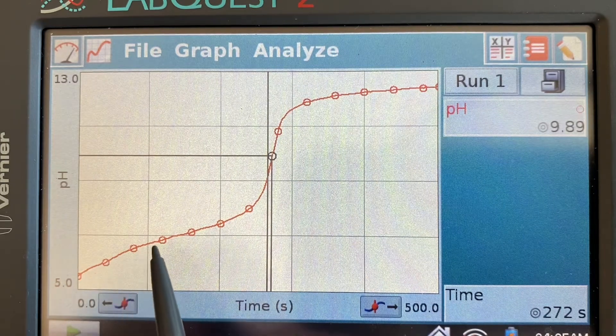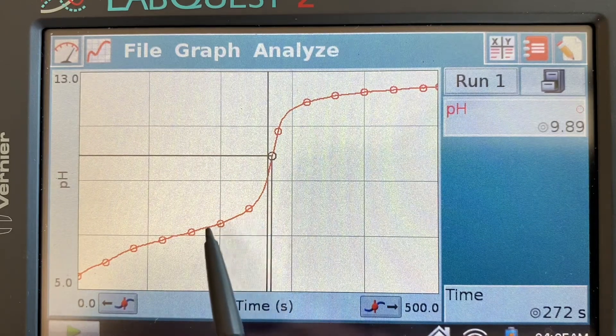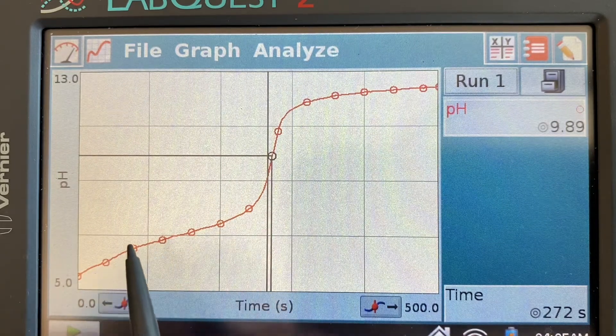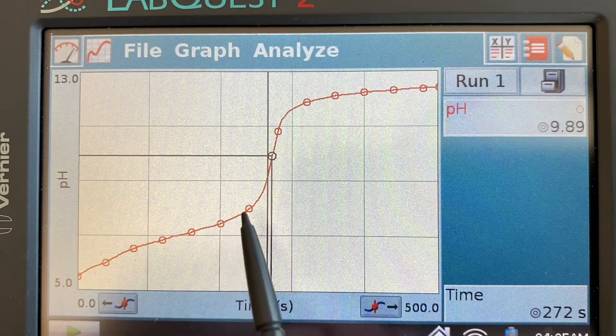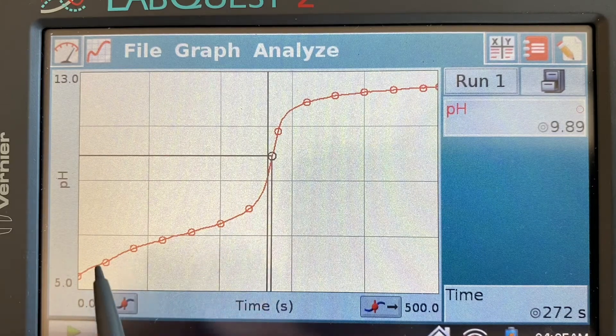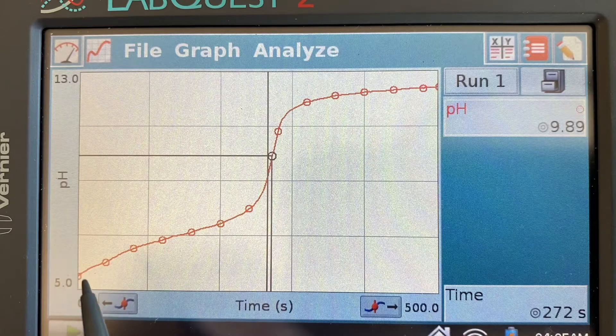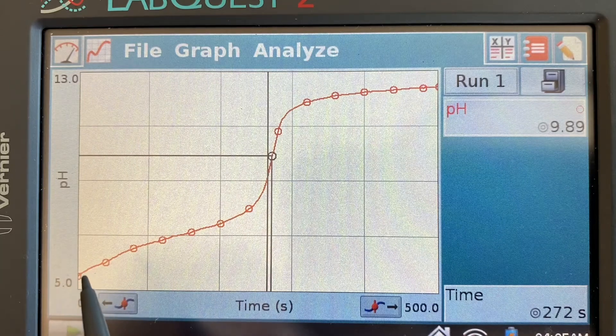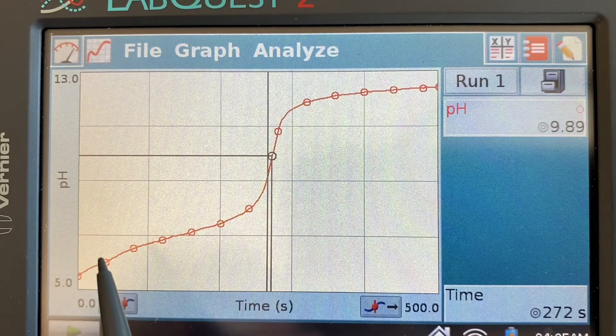And I want you to notice that as soon as it pops up there's a slight flattening of the curve here in this little section, and that flattening of the curve indicates a buffering action that's going on inside the beaker because as soon as some of our weak acid is neutralized it actually becomes its conjugate base.